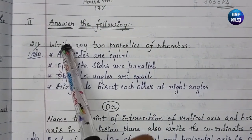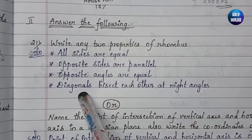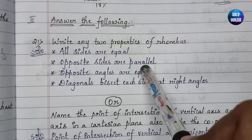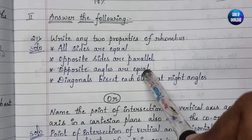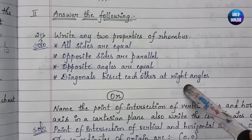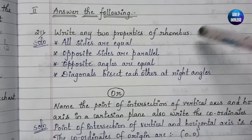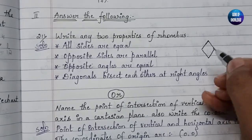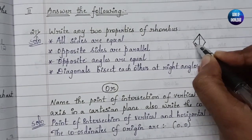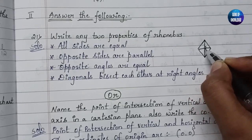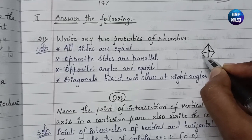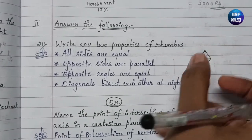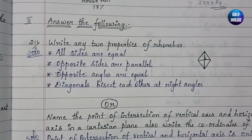Question 21: Write any two properties of a rhombus. I have written four properties — you can mention any two. In a rhombus: all sides are equal, opposite sides are parallel to each other, opposite angles are equal, and the diagonals bisect each other at right angles. The rhombus is similar to a square but shaped like a diamond, and its diagonals intersect at right angles.